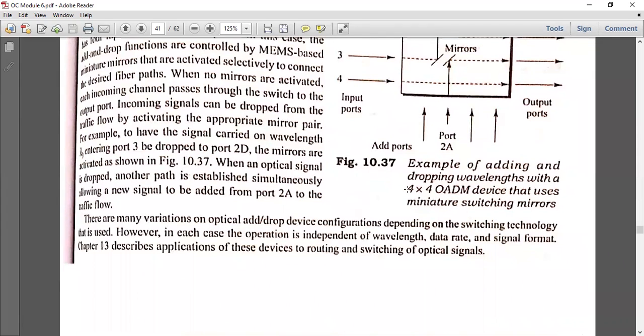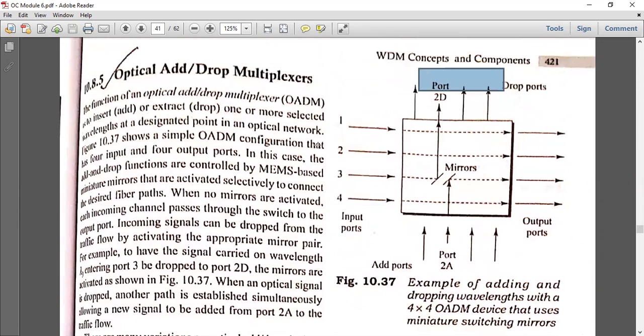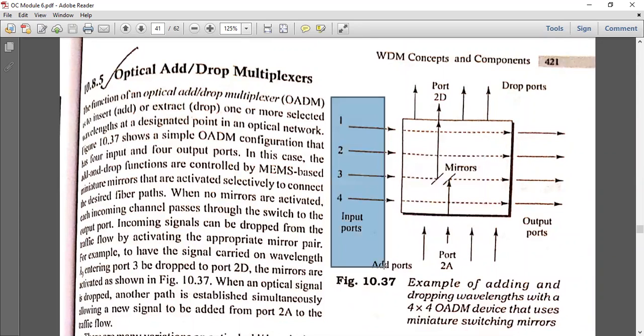There are many variations of add or drop configurations. The level of switching, the simple examples of adding and dropping wavelengths, can use miniature switching mirrors. Another configuration uses four by four ports - four input, four output.